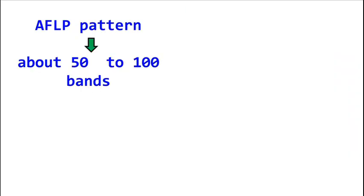The AFLP pattern usually contains about 50 to 100 bands, which are relatively easy to analyze compared to RFLP and RAPD.